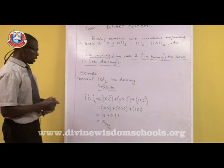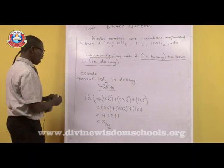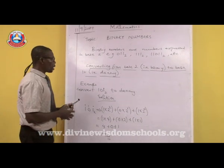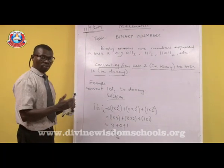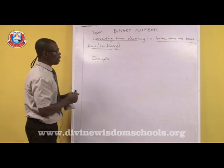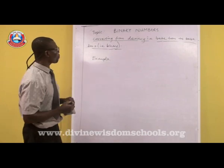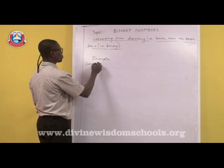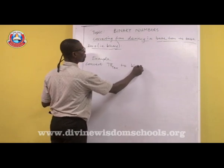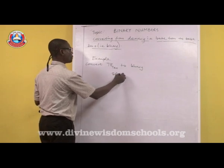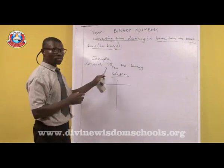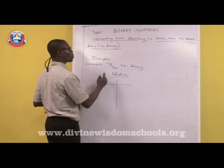Also, you can convert from base 10 to binary. Let's consider an example on converting from denary, which is base 10, to binary, which is base 2. For example, you are asked to convert 78 base 10 to binary. You are going to do a continuous division by 2 until you get the value 78 exhausted. The reason why you divide by 2 is because you are converting to binary, base 2.